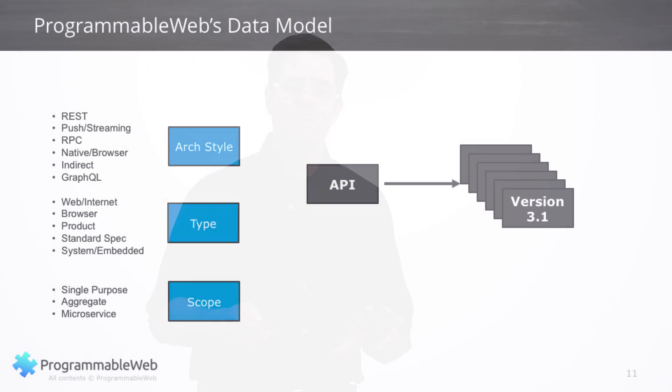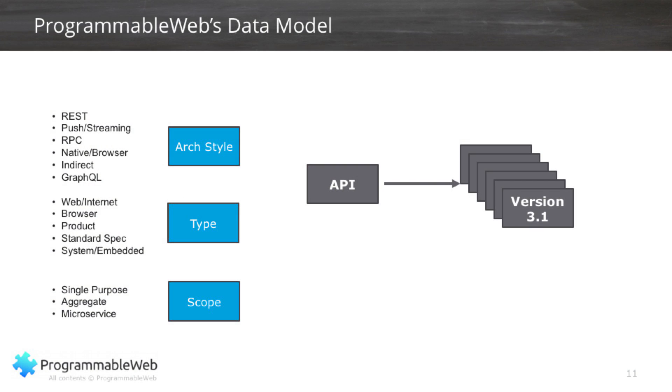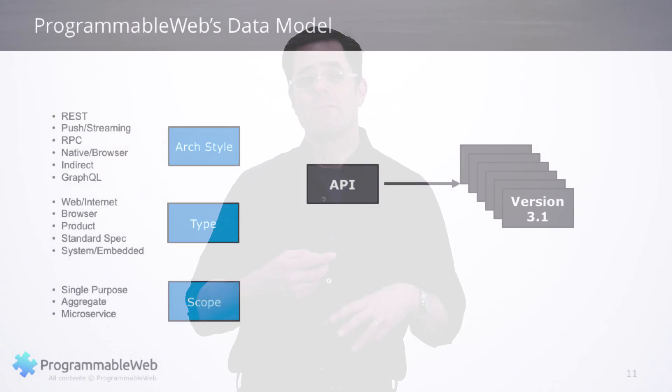Within each API, we maintain a whole bunch of different metadata. For example, architectural style — you may hear terms like REST, PUSH, Streaming, RPC, GraphQL. These are all architectural styles behind APIs on the web. No two APIs are exactly alike; they all use different architectural styles. But we track that so you can look through our database and find, for example, all GraphQL APIs for social networks. We also have what we call the API types: web/internet, browser, product, and so on — we'll go into that in the next video.